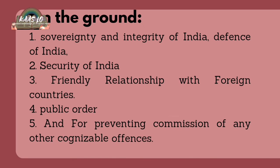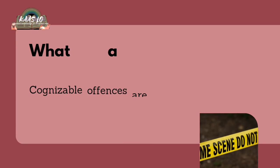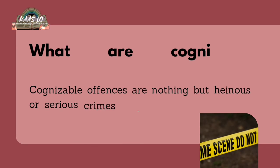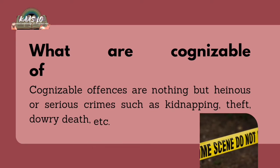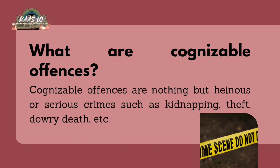Section 69A also covers the prevention of the commission of any cognizable offenses. Cognizable offenses are heinous or serious crimes such as kidnapping, theft, dowry death, etc.